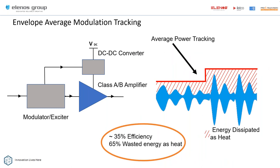Average modulation tracking was the first attempt to significantly improve efficiency. As you can see in the circuit diagram, you have the standard modulator feeding a class AB amplifier, but a sample is fed from the modulator into a DC-to-DC converter. This switches the actual power supply on and off when it's not needed — it works as a step function, so during low signal levels the power supply drops, and during high envelope peaks it increases. Adding this looks simple on this circuit, but if you have 200 transistors, you also have 200 DC-to-DC converters, which increases complexity. You do see a nice improvement in efficiency — from 30 to 35%, which is a big change in electricity consumption.